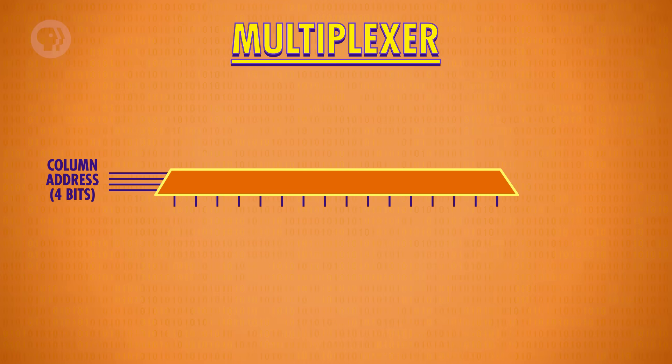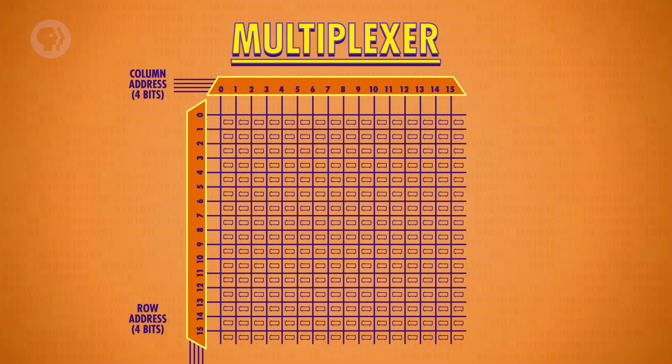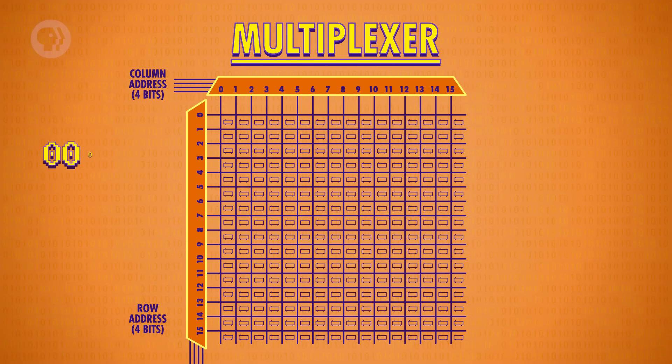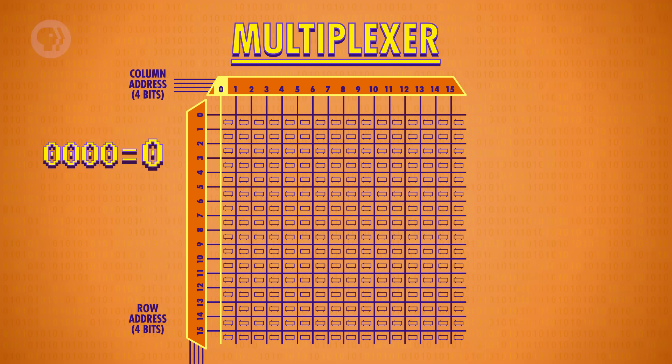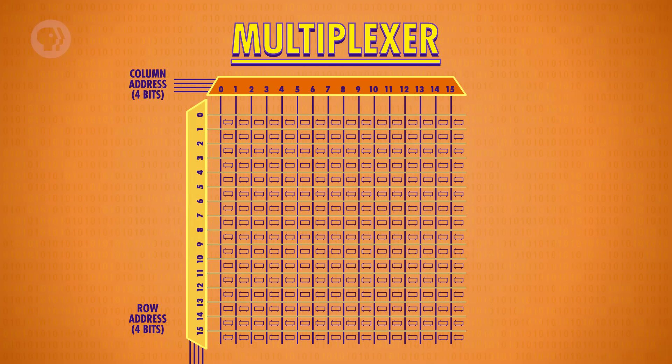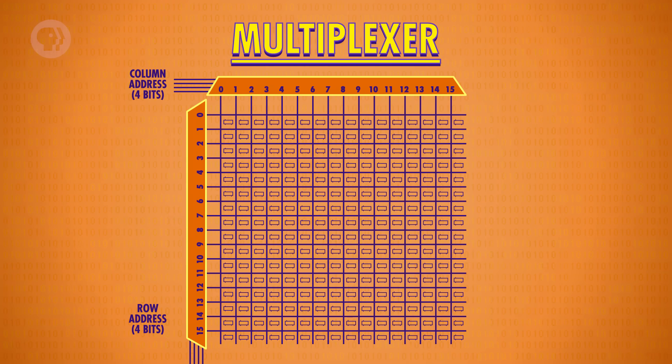To convert from an address into something that selects the right row or column, we need a special component called a multiplexer, which is a computer component with a pretty cool name, at least compared to the ALU. Multiplexers come in all different sizes. But because we have 16 rows, we need a 1 to 16 multiplexer. It works like this. You feed it a 4-bit number, and it connects the input line to a corresponding output line. So if we pass in 0000, it will select the very first column for us. If we pass in 0001, the next column is selected, and so on. We need one multiplexer to handle our rows, and another multiplexer to handle the columns.